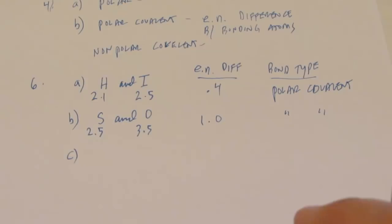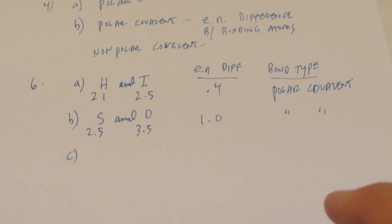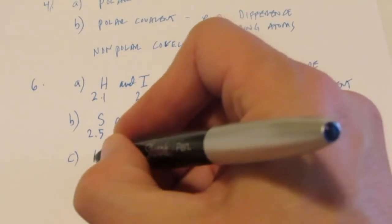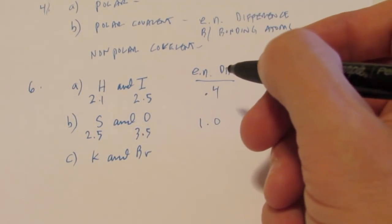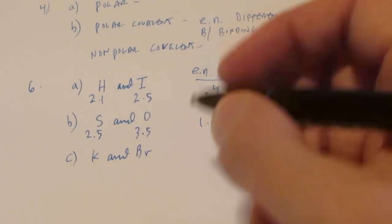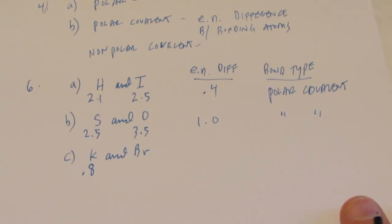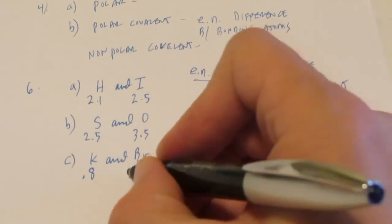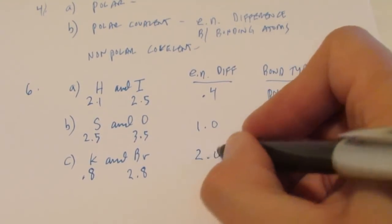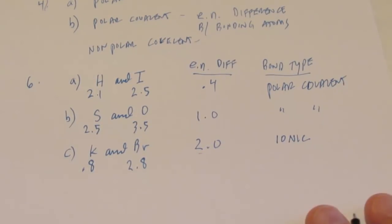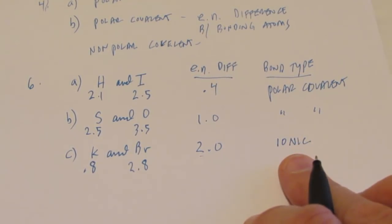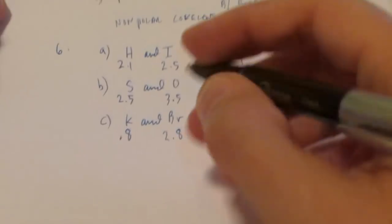So let's do letter C. We've got to flip back over. Letter C is K and Br. And this will be the last one I'm going to do for you. Potassium's electronegativity is 0.8, pretty small. Bromine is 2.8. So the difference here is 2.0, and that's greater than 1.7. Remember 1.7 is the breaking point — it becomes more than 50% ionic. So I would classify the bond between K and Br as being ionic. And you can finish off the rest of number 6 on your own.